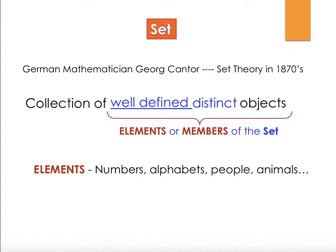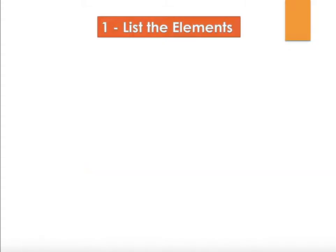These well-defined distinct objects are called the elements or the members of the set. Elements can be numbers, alphabets, animals, people — whatever you want to put into the set, you can put them in by similarity.